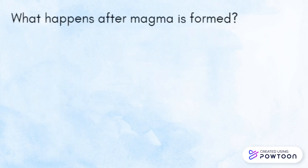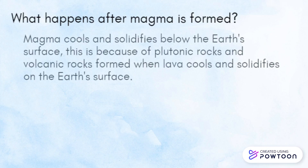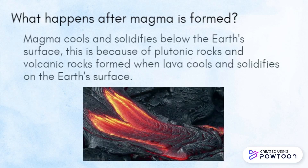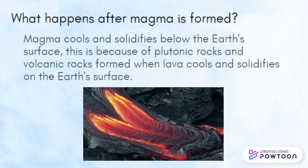What happens after magma is formed? Magma cools and solidifies below the Earth's surface, forming plutonic rocks. Volcanic rocks are formed when lava cools and solidifies on the Earth's surface.